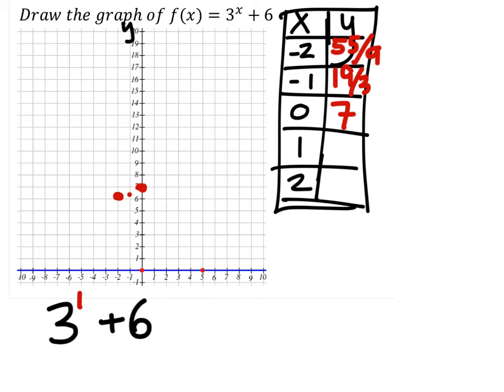And next we'll try x is 1. So 3 to the power of 1 is 3 plus the 6. That gives us 9. We have 9 in the table. And at 1, we have a y value of 9.